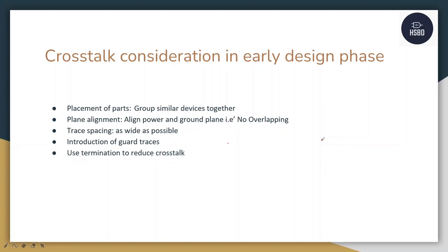Let us discuss the considerations needed in the early design phase to eliminate crosstalk. First is the placement of parts. Whatever power-related, signal-related, high-speed, or low-speed parts you are using, try to group them together in different areas on the board.